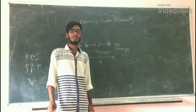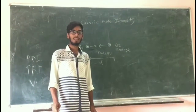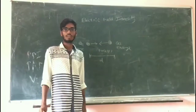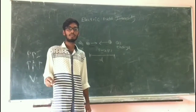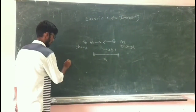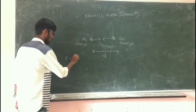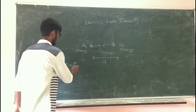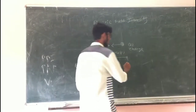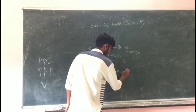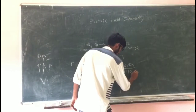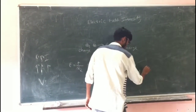Now, if we take to calculate the electric field intensity in Q2 and the electric field in Q1, by my definition of electric field per unit charge, the value of the electric field for Q2 is the electric field.